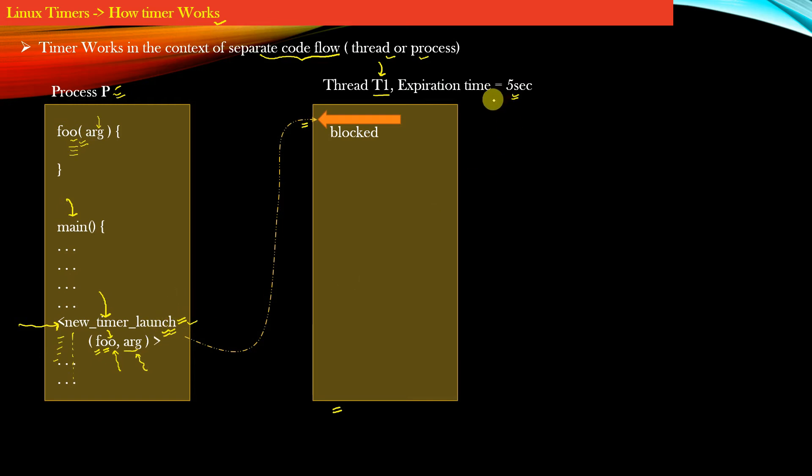Now since the expiration time of this timer was set to 5 seconds, it means that after only 5 seconds has elapsed, the operating system will then invoke function foo with the argument arg which was specified here. Now function foo can execute whatever logic it had.